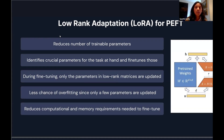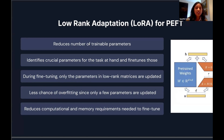LoRA is a technique to further optimize the fine-tuning process. Instead of updating all added weights, LoRA uses low-rank matrices via matrix multiplication. So instead of having 100 weights represented by one matrix, you might only update two matrices — say a 10x1 and a 1x10 — updating far fewer weights, making it less computationally expensive and requiring a lot less memory.